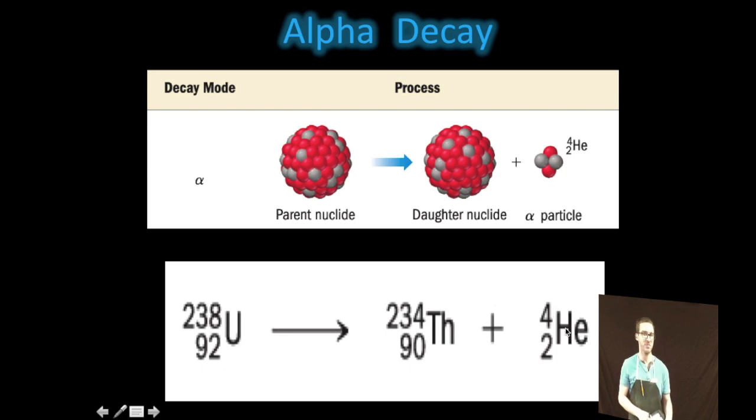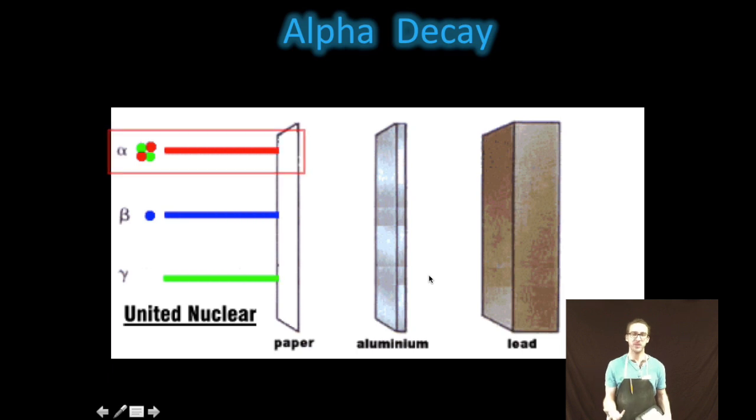Here's a quick animation to illustrate the different penetrating powers of different types of radioactive decay. Right now we're focused on alpha decay, which we can stop with a sheet of paper.